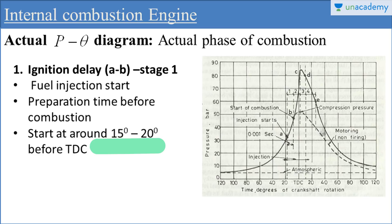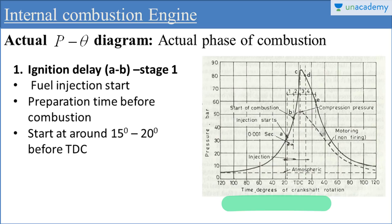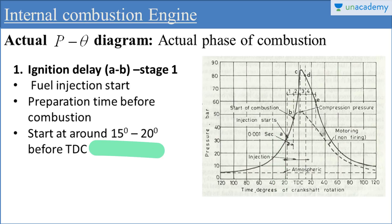As per the stages of combustion in a spark ignition engine, this diagram is similar. The crank angle is divided into different intervals — the middle line represents top dead center, with divisions of 20, 40, 60, 80 on each side. These represent the divisions of crank angle. So this is the ignition delay stage.